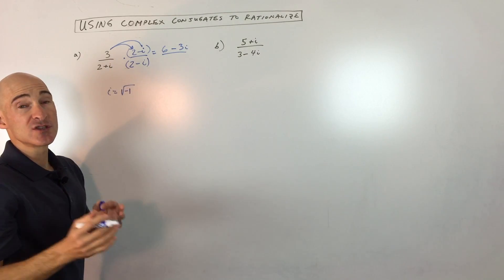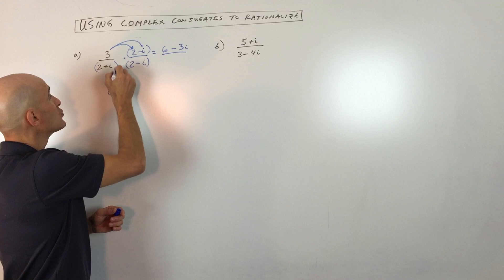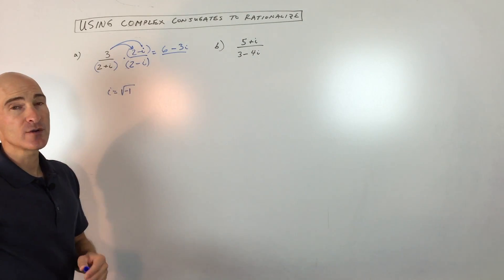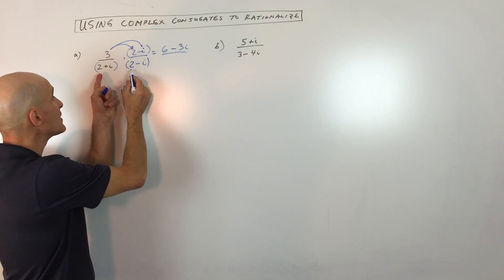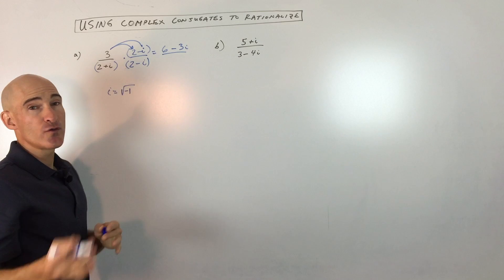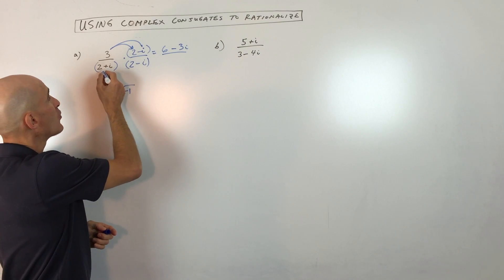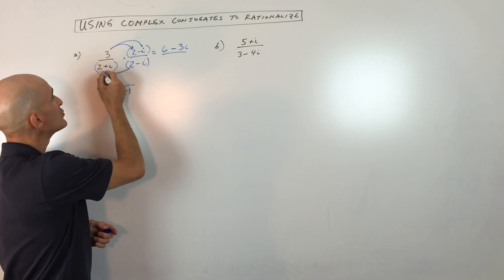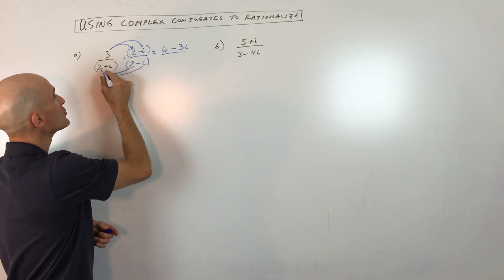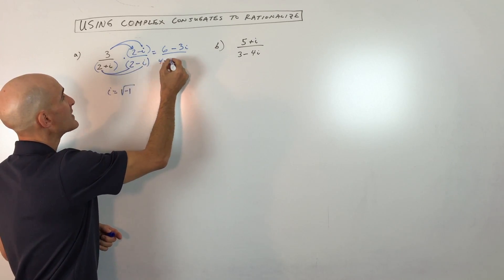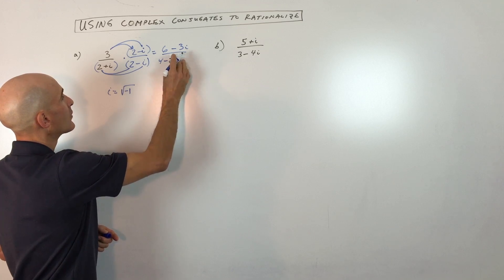And then in the denominator, what we're going to do, since we have a binomial, which means two terms times a binomial, another two terms, is we're going to FOIL. You can do the FOIL method, or you can do the distributive property twice. We'll distribute the two to both of those. So two times two is four. Two times negative i is negative two i. And then we're going to distribute the i to both of these. i times two gives us positive two i.